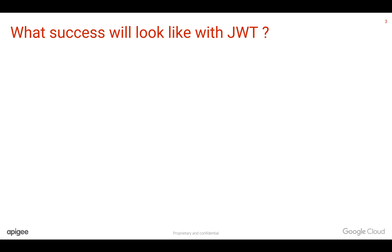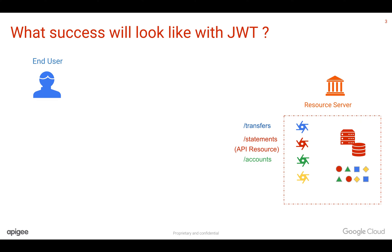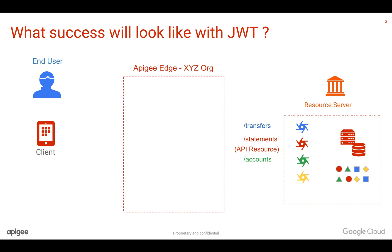So what does success look like with JWT? Let's say you have backend systems belonging to a particular bank, and you have an end user — the bank developed a simple application. Let's call this the client. Apigee Edge can sit in between the client and the backend system and act as an authentication and authorization server. This particular client will register with the Apigee developer portal.